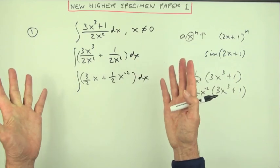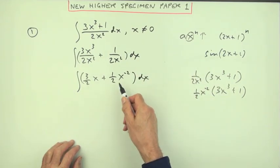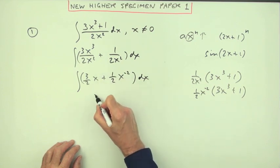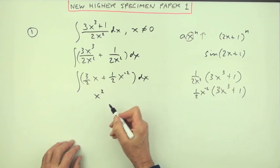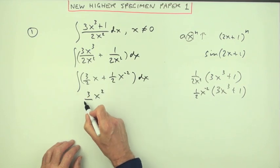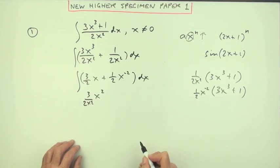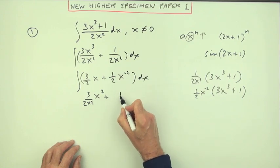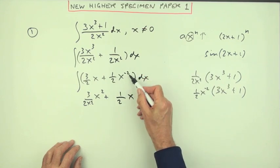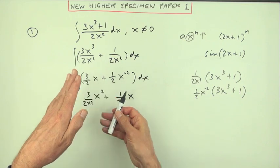Now the next two marks come from doing these two parts, which both follow exactly the same pattern. Add one to the power, so power one goes up to power two, divide by that new power, whichever way you want to do it. Well, I've already got a division line, so I'll just put my times two underneath it.